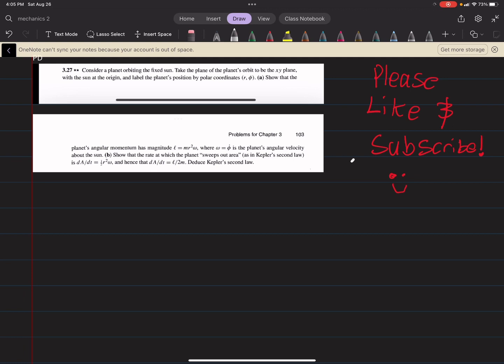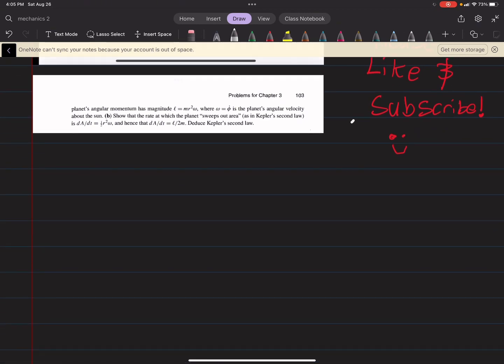Okay, so 3.27 says consider a planet orbiting the fixed sun. Take the plane of the planet's orbit to be the xy plane with the sun at the origin. Label the planet's position by polar coordinates r and theta. Show that the planet has an angular momentum magnitude of L equals m r squared omega, where omega is phi dot, the planet's angular velocity about the sun. And then part b says show the rate at which the planet sweeps out area, as in Kepler's second law, is dA/dt equals one-half r squared omega, and hence dA/dt is L over 2m.